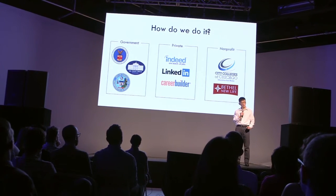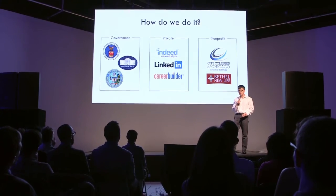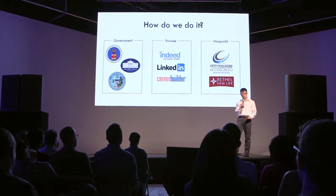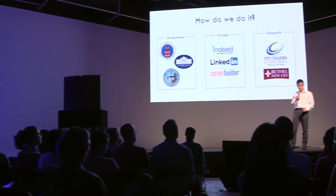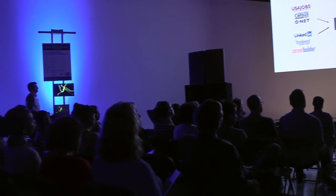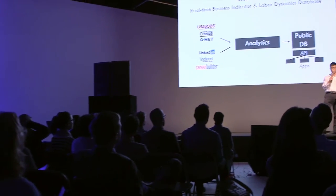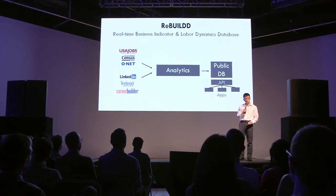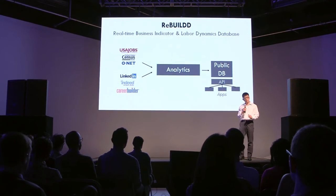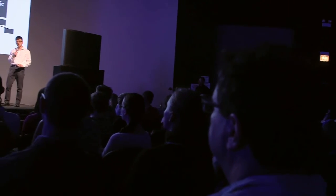How do we do this? We begin by obtaining policy support from various levels of government, data sharing agreements with private companies, and policy implementation partners with nonprofit organizations. Then we build an infrastructure that we're calling REBUILD — Real-time Business Indicator and Labor-Dynamic Database. We integrate data from multiple sources, pass it through our analytics engine to create a public database that developers can access via our API.